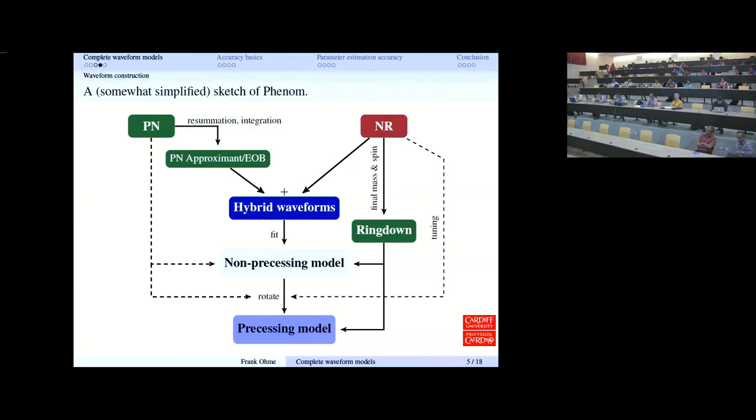What is not so clear in this approach is, once you have a non-precessing model, how do you rotate it? This is really a field of active research. In the model we're using at the moment, the dynamics of the orbital plane are very much inspired by post-Newtonian theory, even though we use it through merger and ringdown where it shouldn't be valid, but it seems to work. In the near future, this should really be tuned to the ever greater set of precessing simulations that we have now.